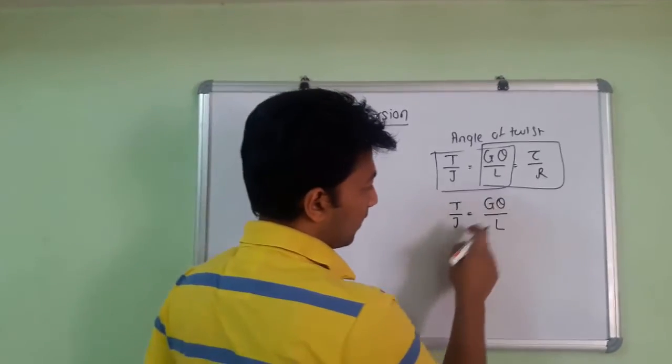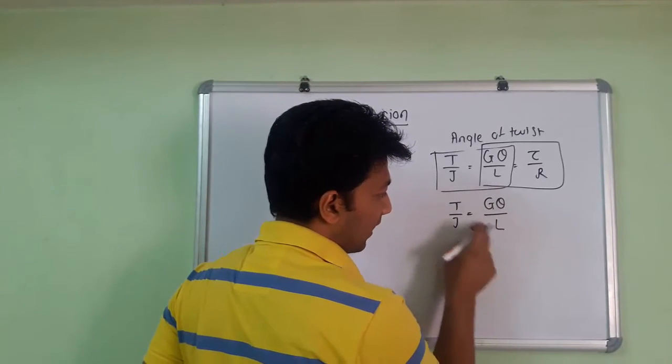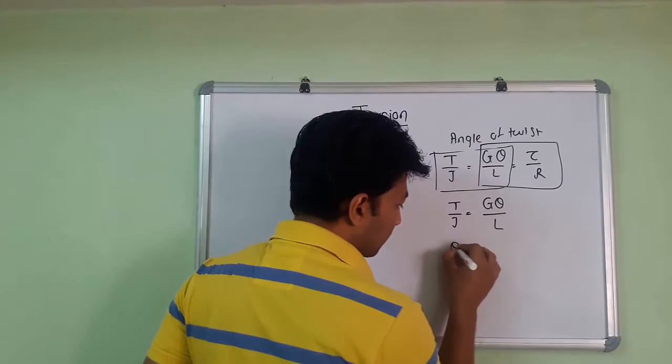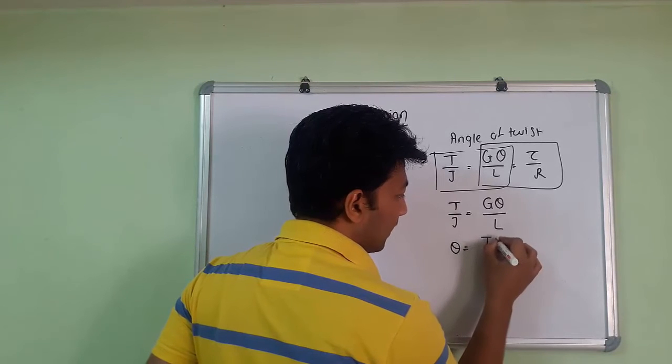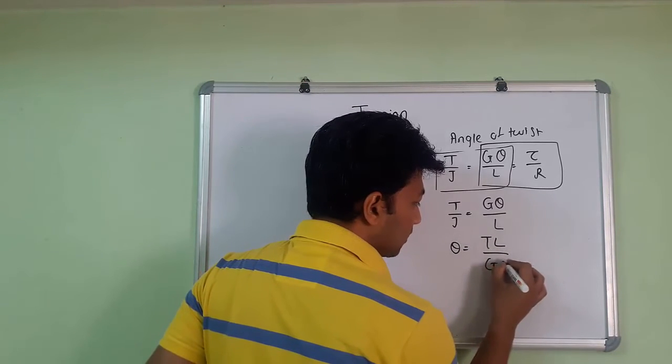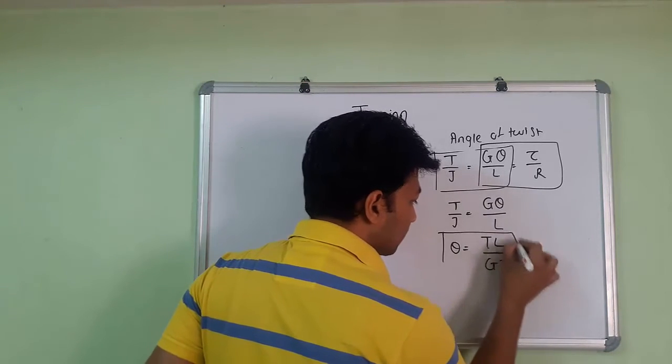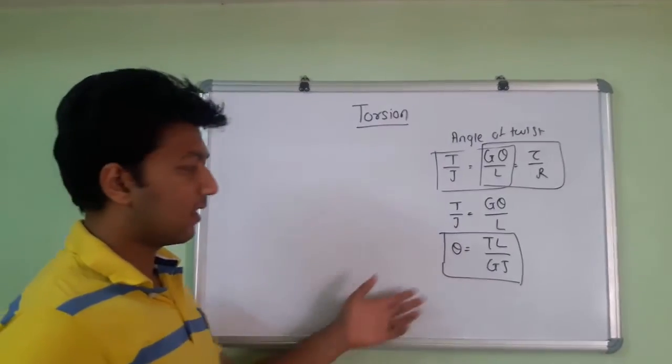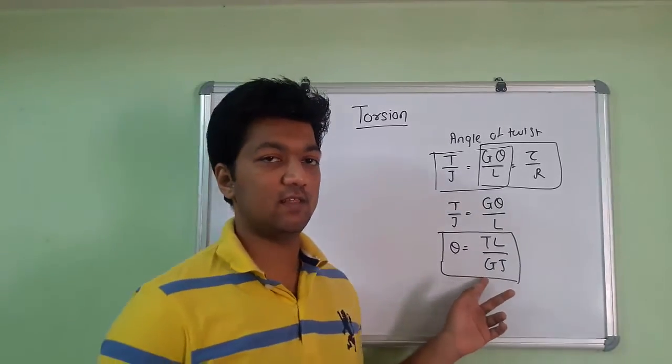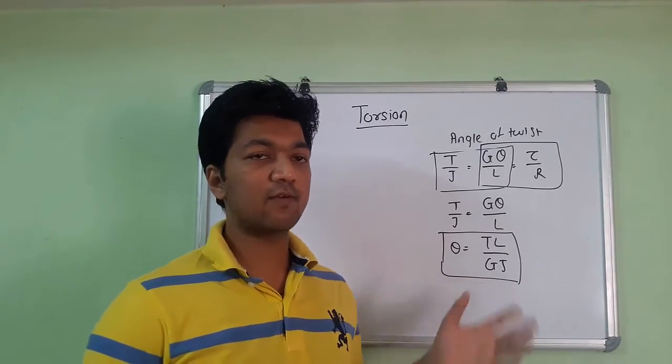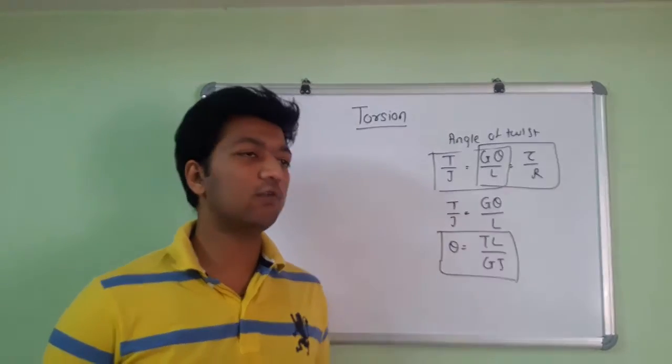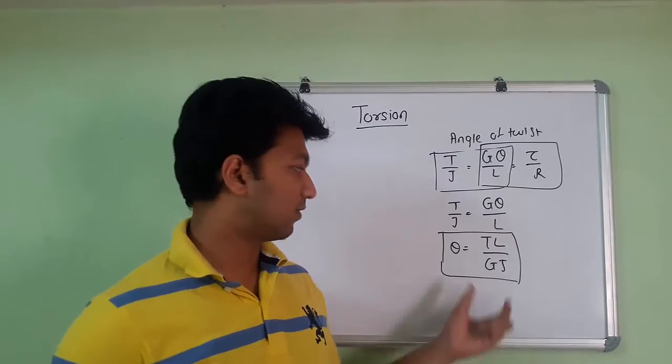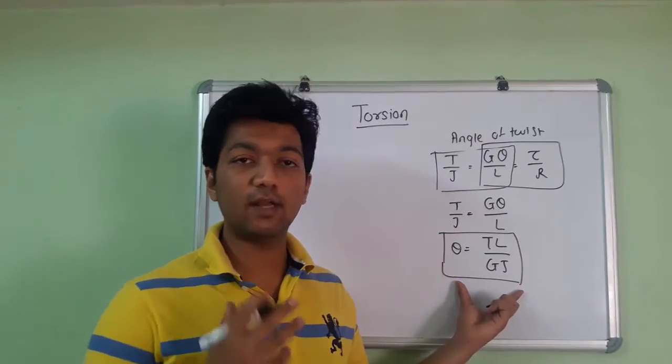That will be T by J equals G theta by L. To find theta, we move G to this side and L to this side. That gives theta equals TL upon GJ. So this is the value of the angle of twist. Remember that this value is always in radians, not in degrees. If given in degrees, you have to convert that value to radians. From this formula we get the value in radians.